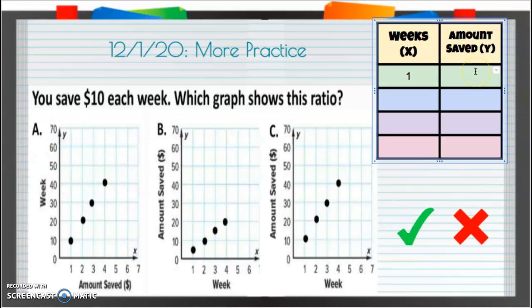For one week we save $10. What about two weeks? Well, if we save $10 for one week, we're going to save $20 for two weeks. How about three weeks? You got it, $30. And four weeks, $40.